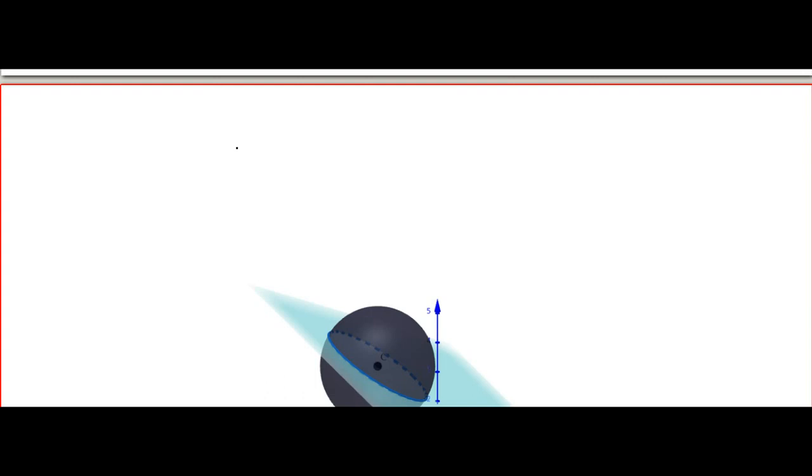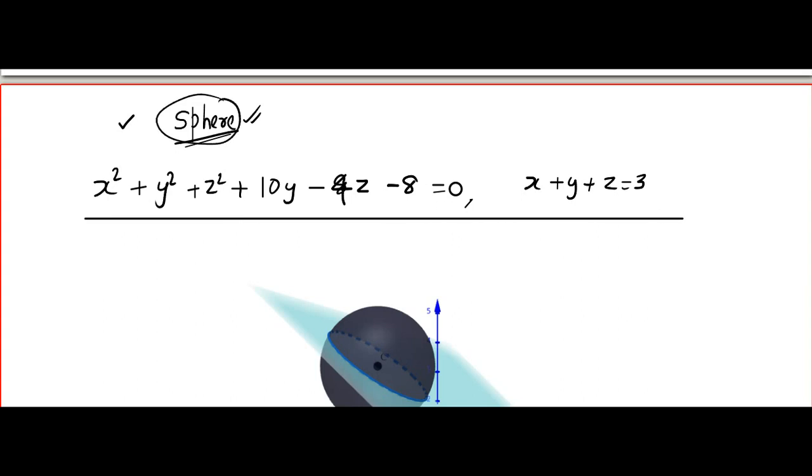I will give you one more question so that you can practice. Please write that question. It is from a recent question paper. I think it is 2076 Badra. Find the equation of the sphere. The speciality of the sphere is the circle x square plus y square plus z square plus 10y minus 4z minus 8 equal to 0, x plus y plus z equal to 3 becomes a great circle. What should be the speciality of the sphere? This circle should become the great circle. Please try it and please comment the answer below. It will be very helpful for the next person who will be watching this video.